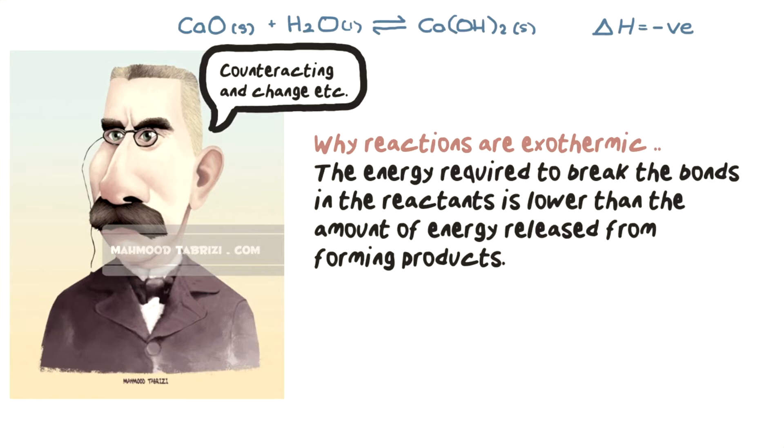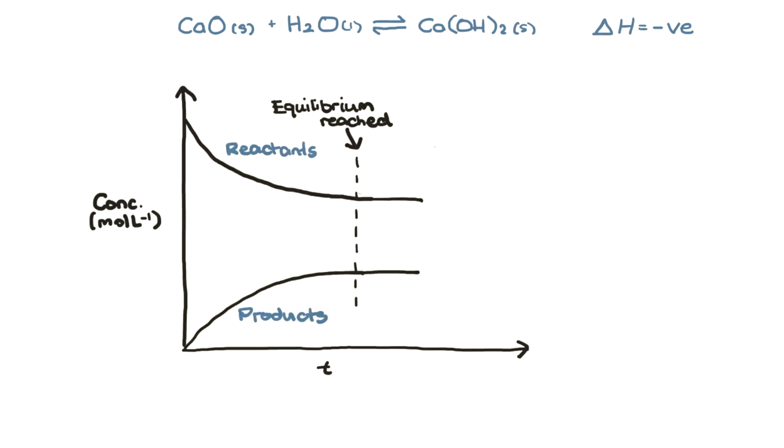Now according to Le Chatelier and his counteracting change thingy, decreasing the heat of this reaction at equilibrium will favor the reaction that will reduce this decrease in heat, which is the forward direction. An easier way of thinking about it is if you consider the heat loss as a product, but it really isn't.